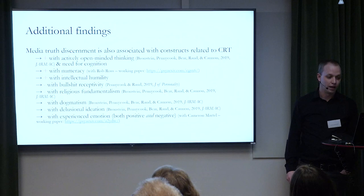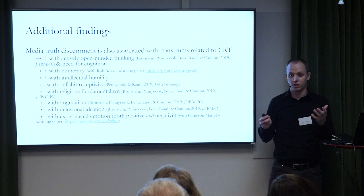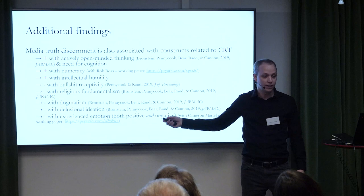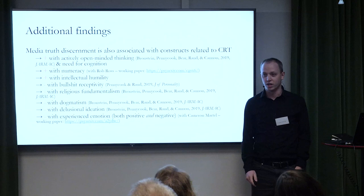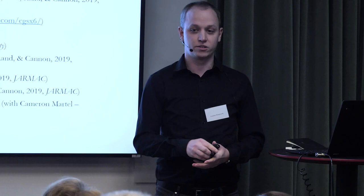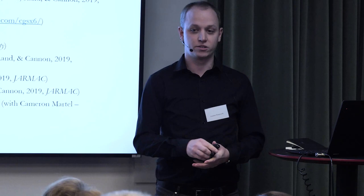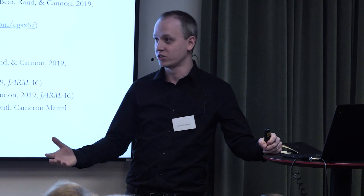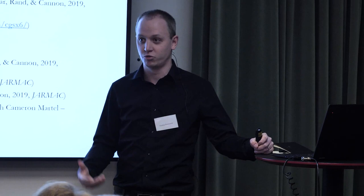We haven't just looked at the CRT — a bunch of different measures including numeracy also correlate with people's ability to discern between true and false content. The one worth pointing out in particular is emotionality. People who score high on trait-level emotionality are worse at discerning between true and false content, which makes sense: the mechanism used to get people to share false content is largely the affective reaction Ellen was talking about — strong emotional responses. If you are more emotive, that's going to have a bigger impact on you.